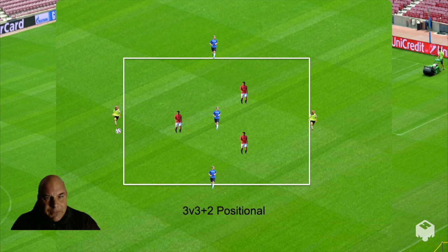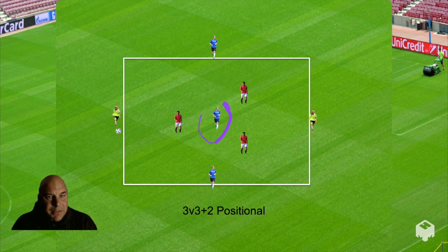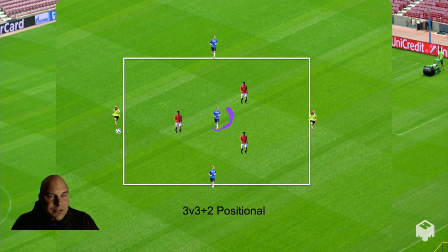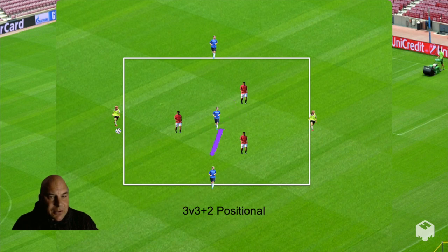Here's a less complex rondo — a 3v3 plus 2 with only one player in the middle. Finding space for that one player is pretty simple. There are three defenders, and he doesn't have to worry about being in the path of his partner or taking up his partner's angles.